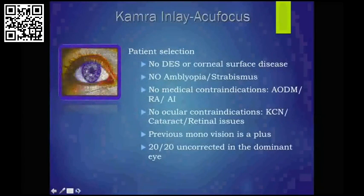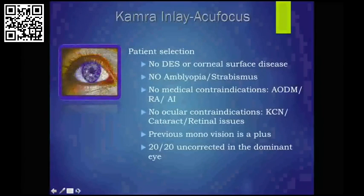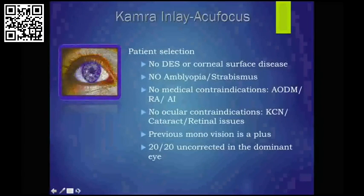From an ocular standpoint, it's paramount that we address corneal surface disease. Be attentive to rheumatoid arthritis and autoimmune disease, as well as scleroderma, and be very wary of patients with fibromyalgia. Previous monovision is a plus for these patients. I've worked with previous LASIK patients that underwent monovision and didn't care for it due to decreased stereopsis and decreased distance vision, but with the new inlay it certainly helped resolve many of those negative aspects associated with monovision LASIK. 20/20 is paramount in the uncorrected dominant eye.